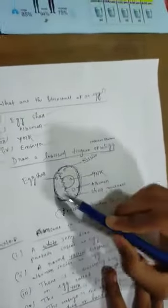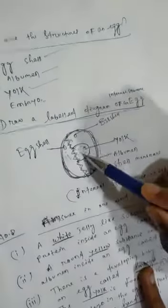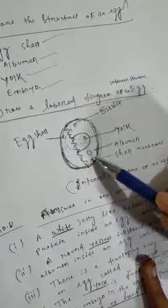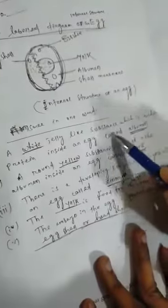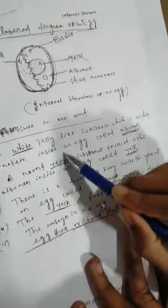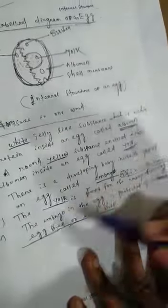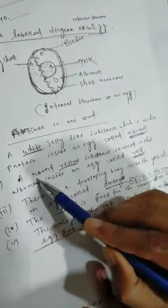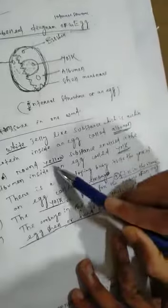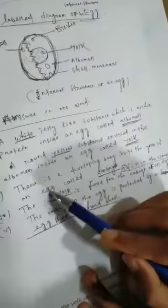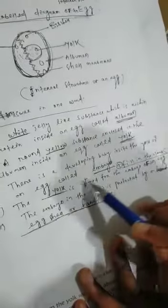Question number seven: Draw a labeled diagram of internal structure of an egg. Question number eight: Answer in one word. A white jelly-like substance which is rich in protein inside an egg is called albumin. That means a round yellow substance enclosed in the albumin inside an egg is called yolk. Number third: The developing baby inside the yolk of an egg is called embryo.